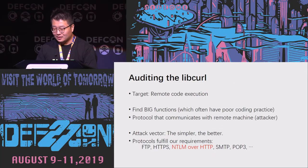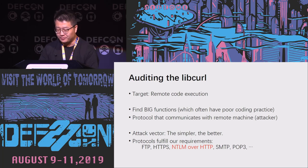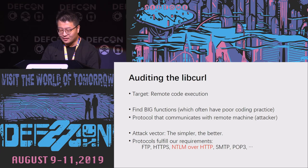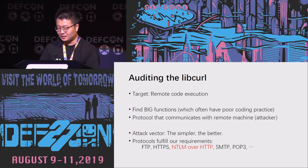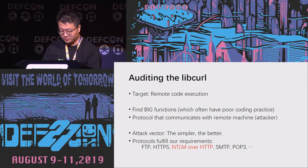Now let's look at libcurl. Our target is remote code execution, but libcurl is widely used and its code review happens quickly. To find vulnerable functions, here are some guidelines for reading code quickly. First, find big functions — functions with too many lines are not recommended in software engineering and are difficult to test, providing a lot of attack surface. Most functions enabled in libcurl are related to remote interactions and communicate with remote servers. After carefully reviewing the protocols, we confirmed that NTLM over HTTP was what we wanted to test.